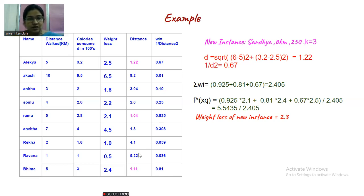And calculation of f cap of xq, the new instance, it is wi multiplied with f of xi. What is the f of xi value for the first nearest neighbor? It is 2.1, multiplied with the weight 0.925. Next nearest neighbor is 1.11. So what is the f of xi value that is associated? It is 2.4. Weight is 0.81. You can see here, plus the third one, the f of xi value is 2.5. The weight associated with this is 0.67, so it is 0.67 into 2.5. So if you sum all these things and divide with sigma wi, you are getting a value of 2.3. So this value will be assigned to the new instance.